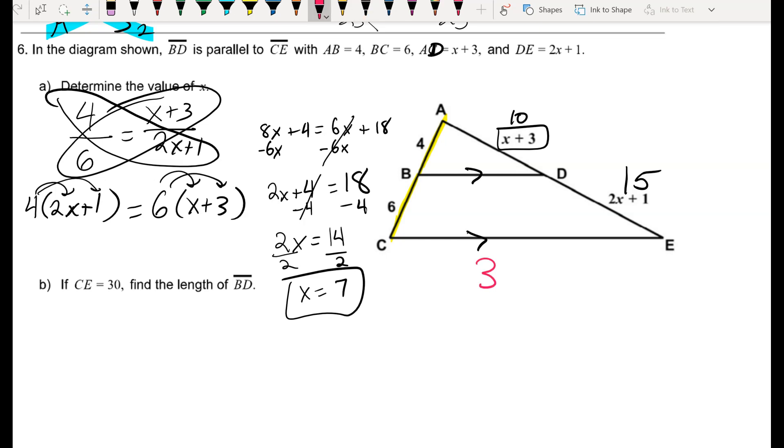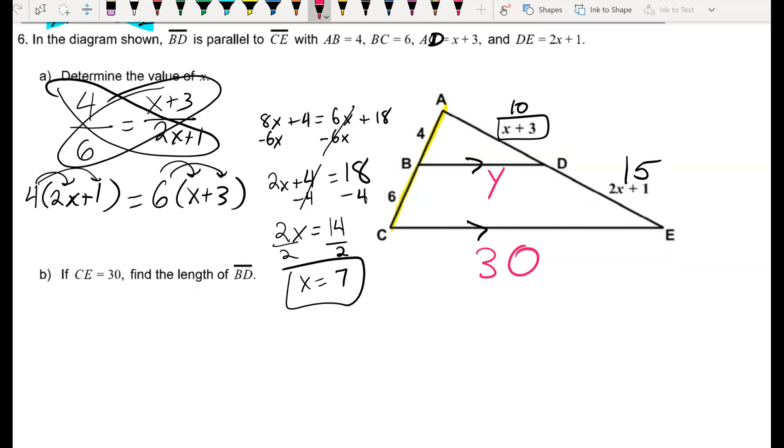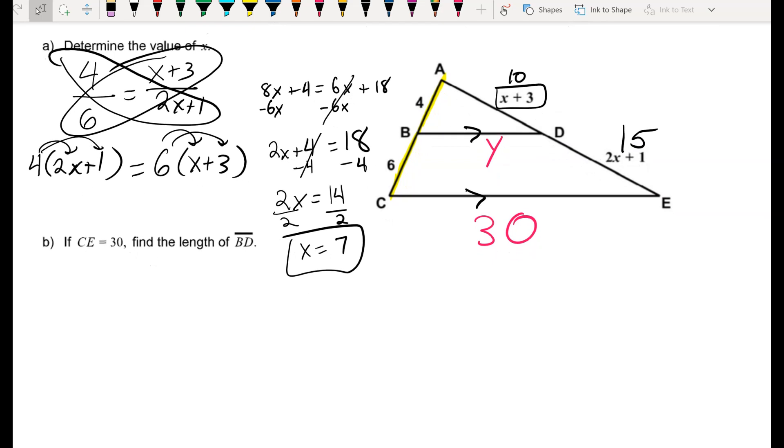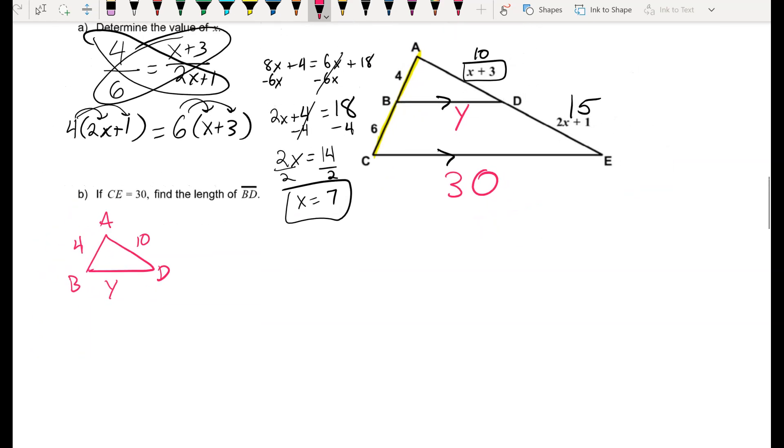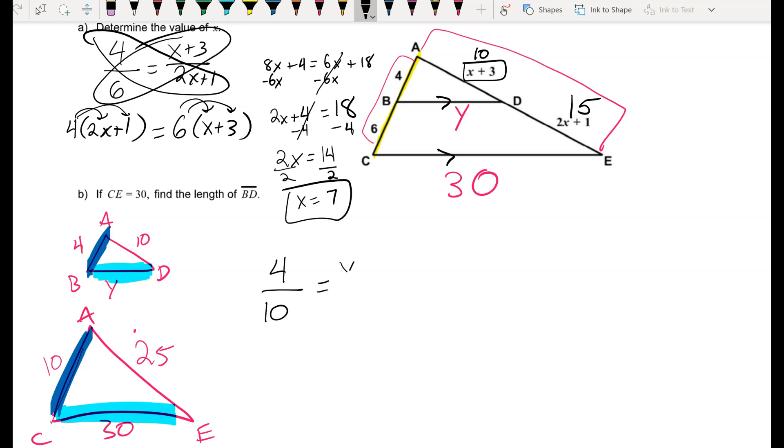Now it says if CE equals 30, find the length of BD. So there's lots of things you could do here. I'm going to set up a similar triangle proportion because my small triangle on top has these side lengths, 4, 10, and what I'm looking for, y, and my big triangle on the bottom, you've got to think a little bit harder about how to get those sides. I know the bottom side is 30. If I add up 10 and 15, that's 25. And if I add up the 4 and the 6, AC is 10. So since I know all of my sides, I'm just going to take one corresponding side over its bigger corresponding side equals the small corresponding side over its bigger corresponding side.